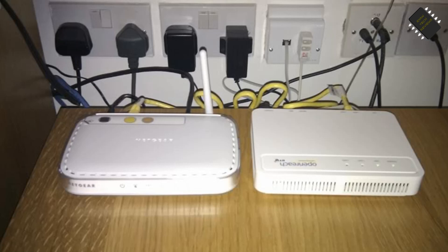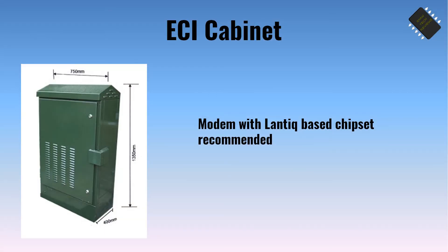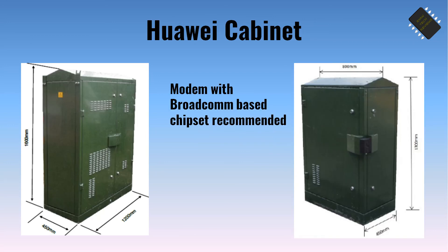If you do opt to purchase a new modem then it is best to buy one that matches the chipset of the cabinet you are connected to. If you are connected to an ECI cabinet like the one shown here, a modem with a Lantik chipset would be best. Alternatively, if you are connected to a Huawei cabinet like the one shown here, a modem with a Broadcom chipset would be best. An advantage of matching your modem chipset with that of your cabinet is that you will be able to read additional statistics on your phone line connection.